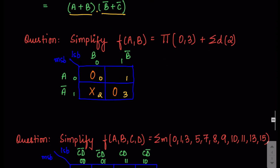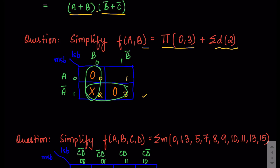Suppose we have a two-variable function A and B in POS form with max terms 0 and 3, and a don't care term at position 2. We make the k-map with four boxes, marking zeros for the max terms and a cross for the don't care. The don't care is helpful here — it allows us to make a group of two with position 0, and another group of two. Without the don't care these two zeros could not have been combined since diagonal grouping is not allowed. The answer is A-bar dot B.